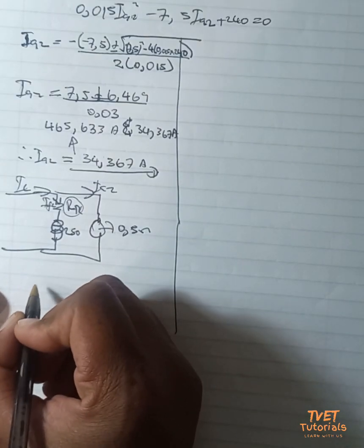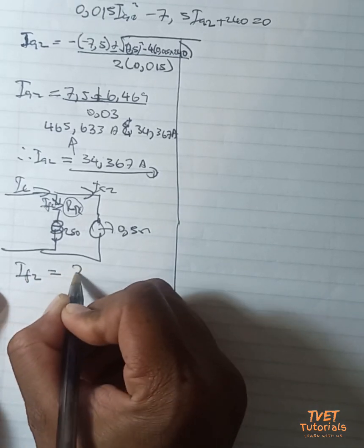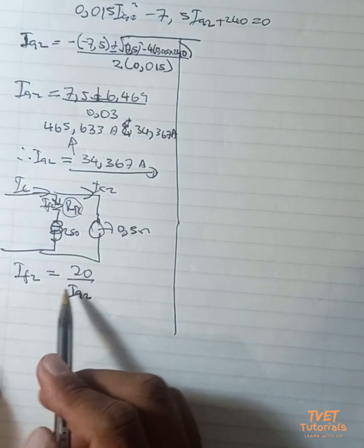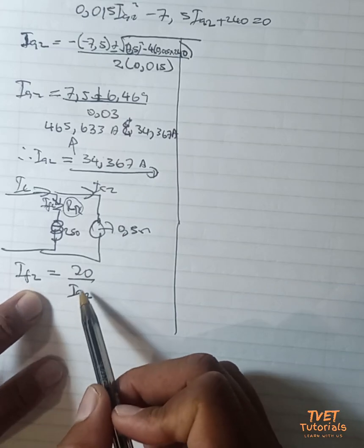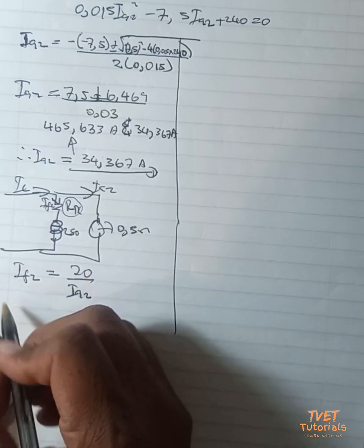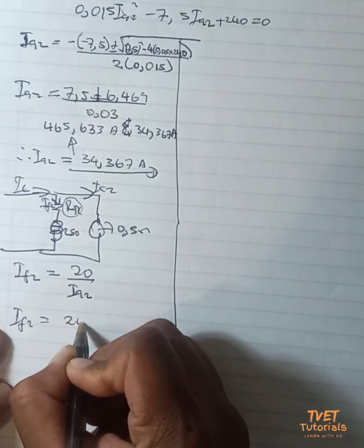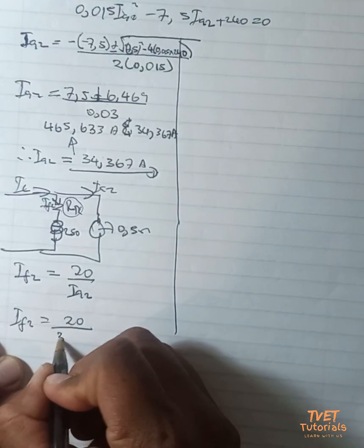Remember in the previous video we did say that I_field2 is equal to 20 over I_a2. If you can just go scroll back and see how we came up to this conclusion. If you substitute that, then it means you have I_field2 which is equal to 20 divided by